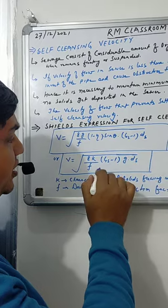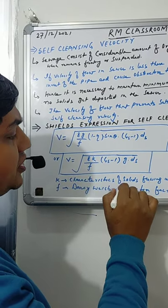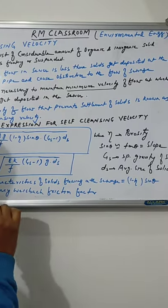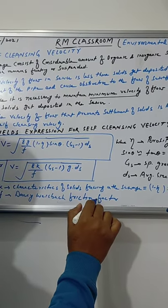It can also be written by this form where K is the characteristics of solid flowing through the sewage and that is equal to 1 minus Eta into Gs minus 1, and F is the Darcy-Weisbach friction factor.